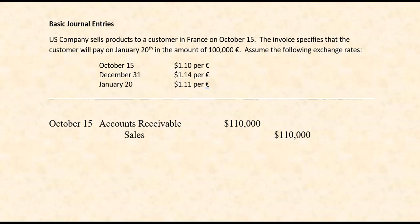No additional journal entries are needed until December 31. Why do we need one on December 31? The customer is not paying us on December 31. The reason is December 31 will be the end of the company's fiscal year. And under U.S. GAAP, they are required to update the value of any asset or liability that is measured in a foreign currency. Our accounts receivable is measured in euros, and euros might have changed in price, so we need to update the value of the receivable.